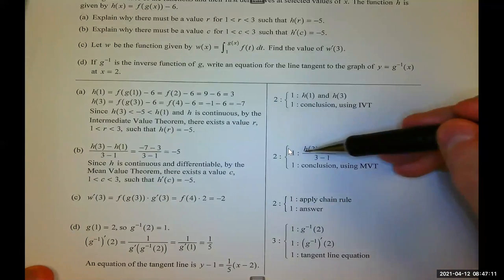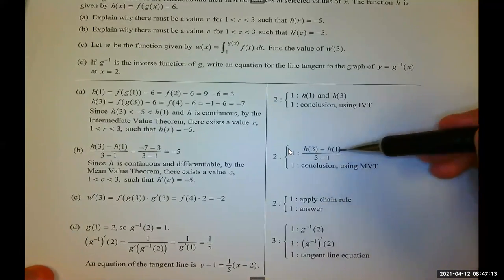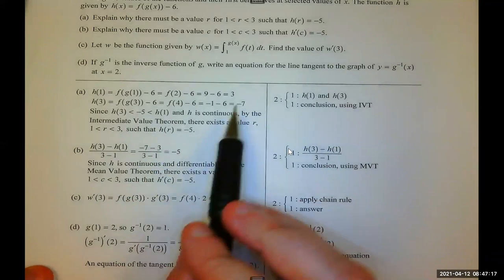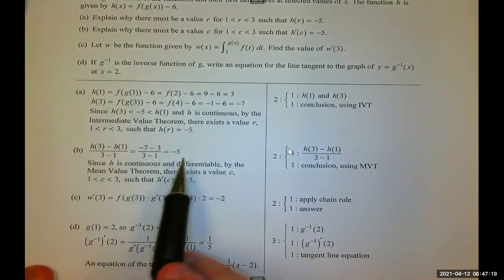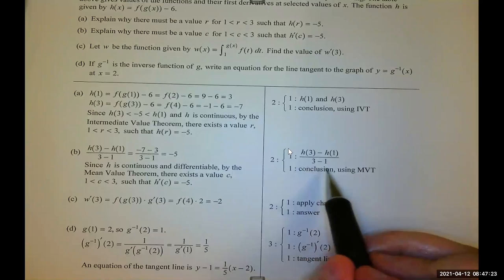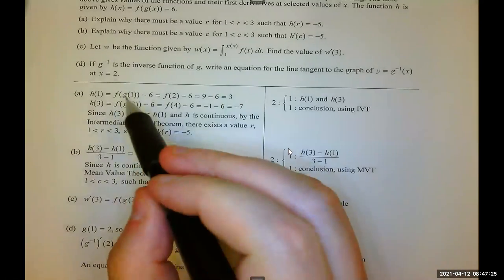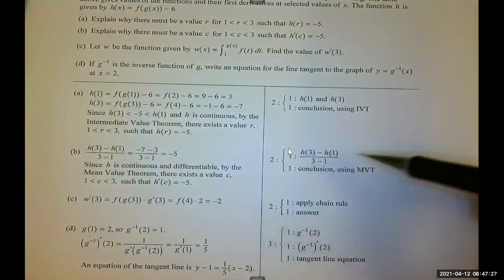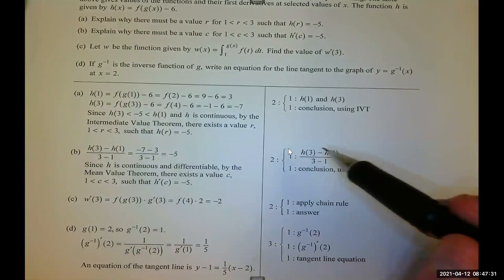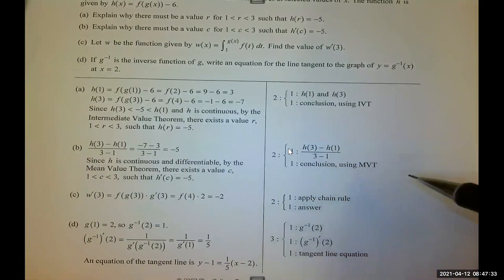For part B, you get one point for calculating the average rate of change of H. So, that uses the H values from part A, and you get negative 5. Now, if you were to have done this using your wrong values of H of 1 and H of 3, you would get that first point here. I don't think you would be eligible, though, for the second point.